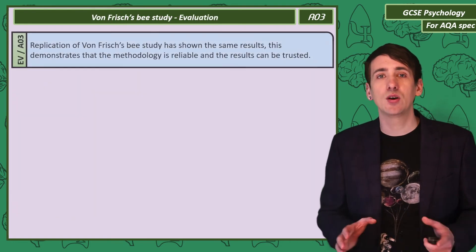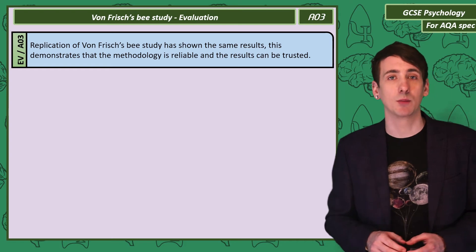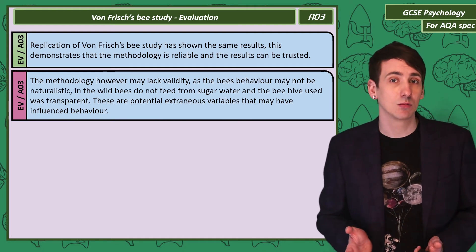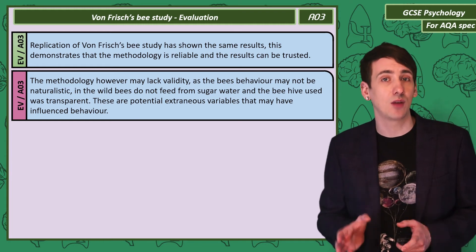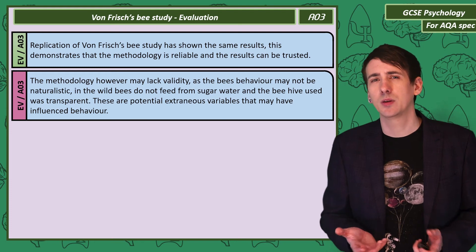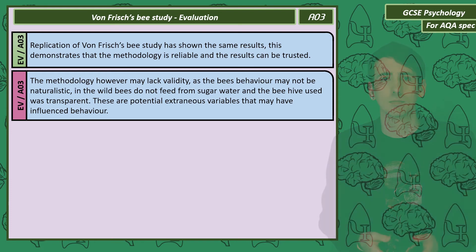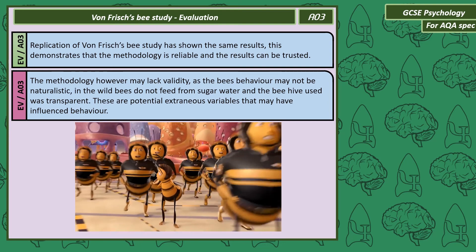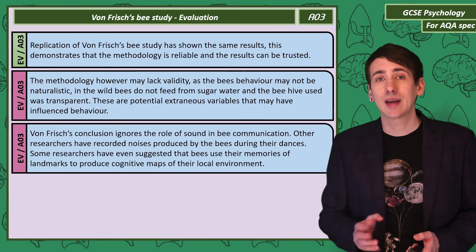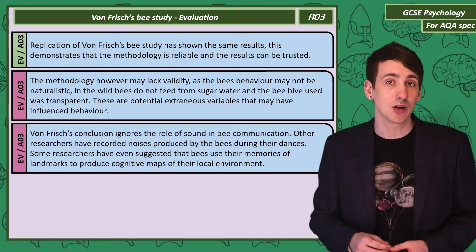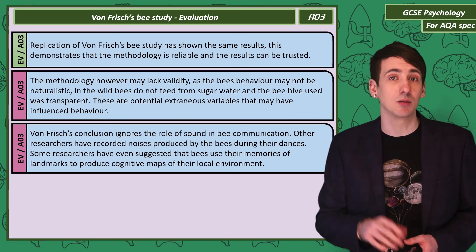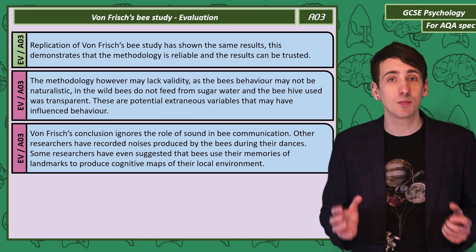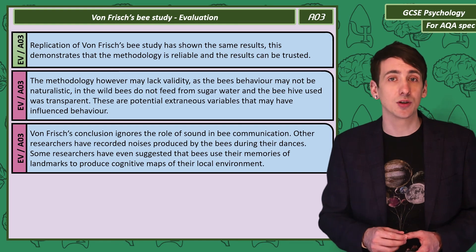Let's evaluate Von Frisch's bee study. Positively, the study has been replicated a number of times with the same results, showing we can trust the findings. We may criticise the study for lacking validity — the bees' behaviour might not have been the same as wild bees that feed from flowers rather than sugar water, and the transparent beehive is unusual, though the bees wouldn't have been aware they were being observed. We can also criticise the study for underestimating bee communication: the role of sound has since been found to be important, with researchers recording noise produced during the bees' dancing. Some theories also suggest bees can produce cognitive maps, including memories of landmarks — not bad for a creature with a brain the size of a pinhead.